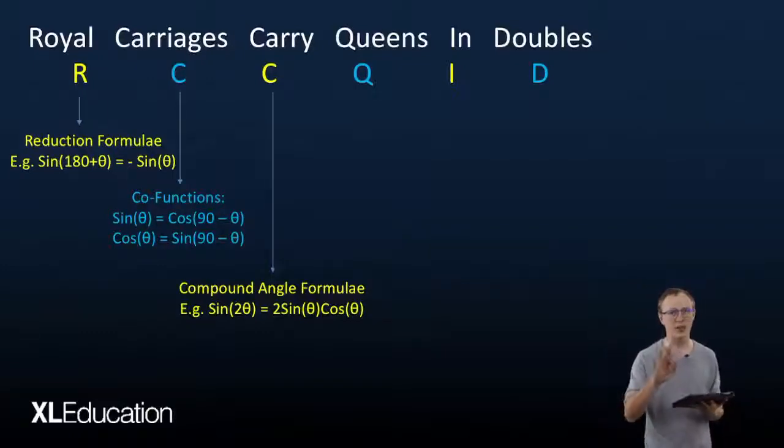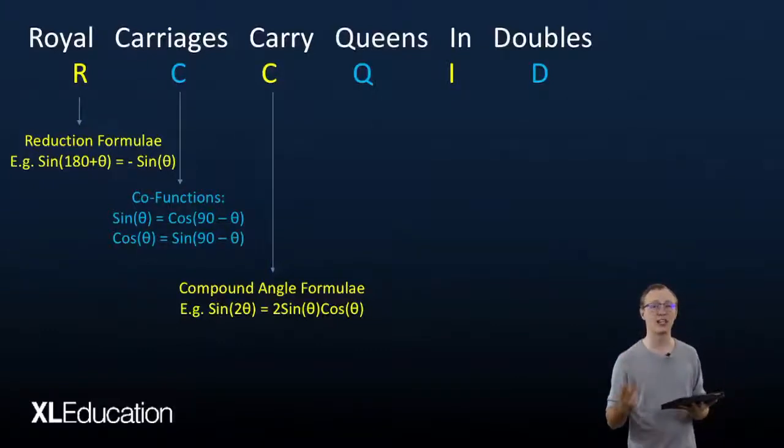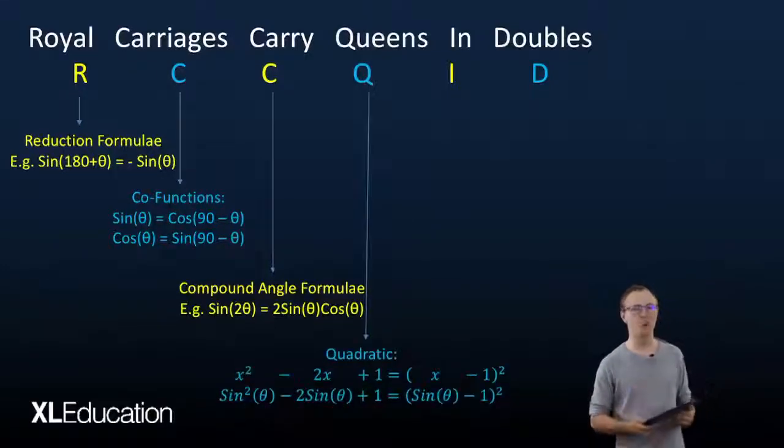Right, so thus far you've got three things to check for: Can I use reduction formulae? Can I turn sine into cos or cos into sine? Or can I use compound angle formulae? Then we move on to queens.